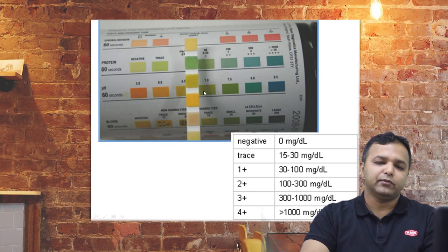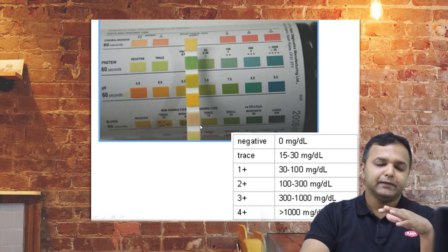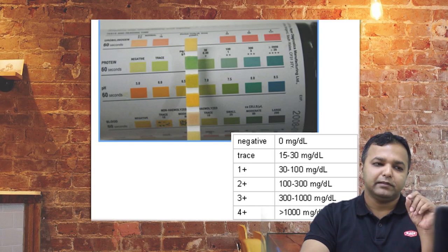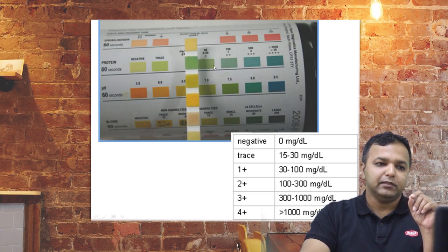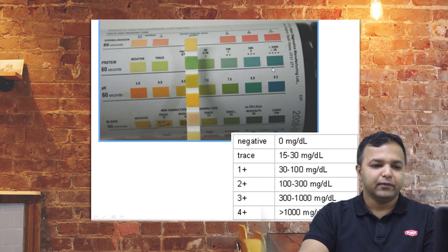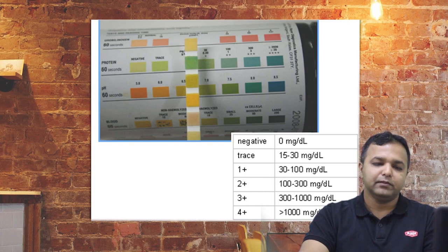This is a simple urine dipstick, which is a point-of-care test available at the pharmacy. You dip it in the urine, take it out, and read the protein portion after one minute. In nephrotic syndrome, we expect the color corresponding to 3+ or 4+, which is parallel to a protein concentration of 300 to 1000 mg/dL or more than 1000 mg/dL.